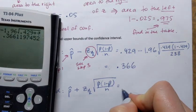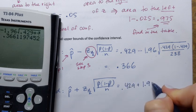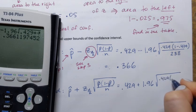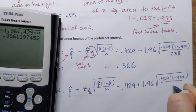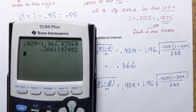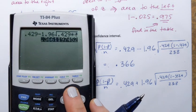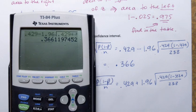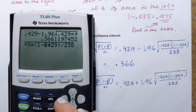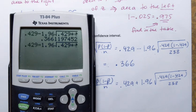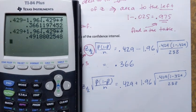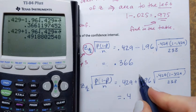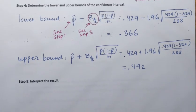The upper bound is found the same way but adding instead of subtracting. A quick trick on the calculator: go back to the previous expression, highlight the minus sign, and change it to plus — everything else stays the same. Pressing enter gives 0.492. So the upper bound is 0.492.